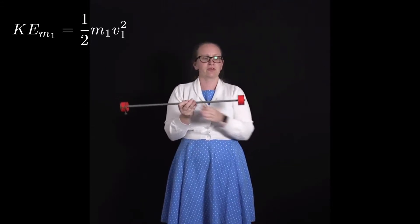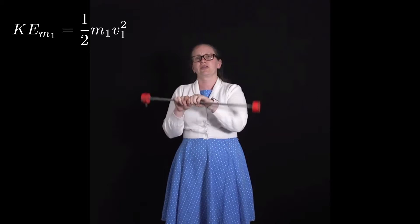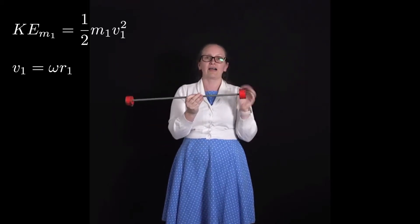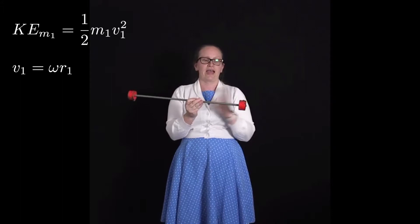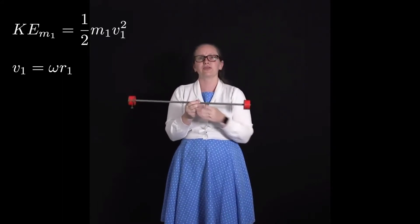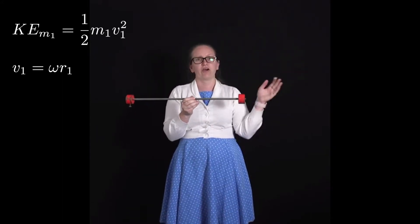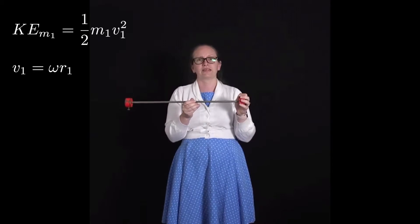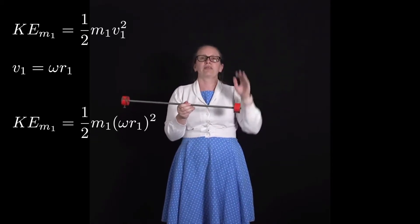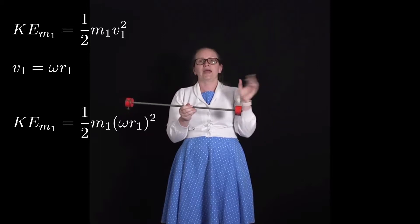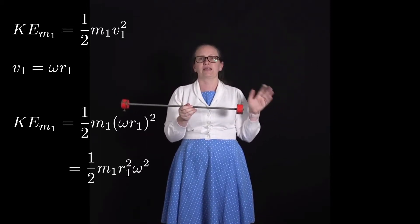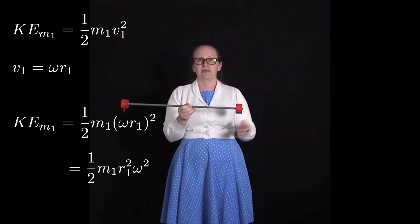Since it's moving in a circle, we know that v = ωr. In this case we have v₁ at radius r₁. So the kinetic energy of mass one is given by ½ m₁ (ω r₁)², which equals ½ m₁ r₁² ω².